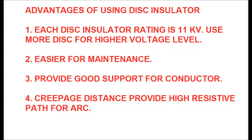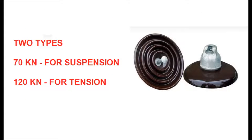There are two types of disc insulators based on material: one is porcelain and number two is glass insulator. Based on use, disc insulators are of two types: 70 kN used for suspension type string and 120 kN used for tension type string.